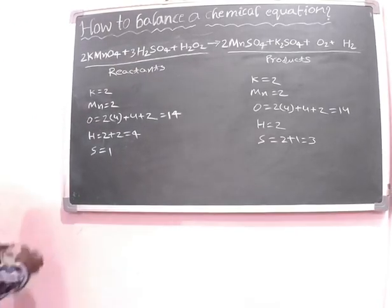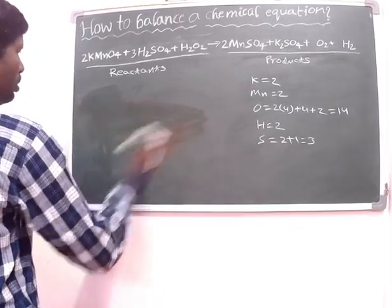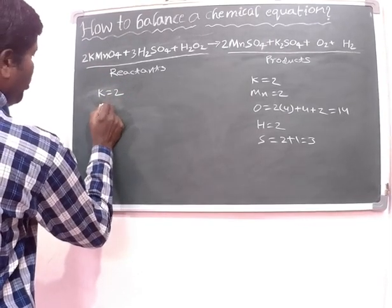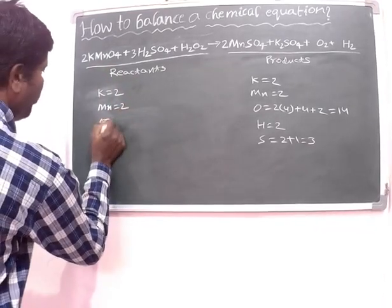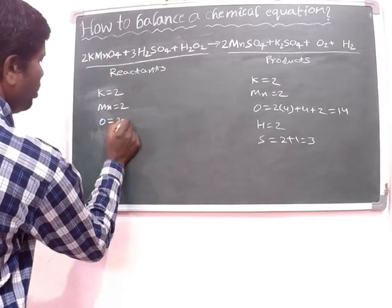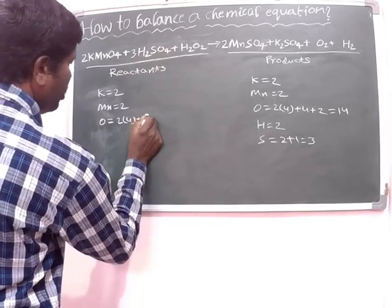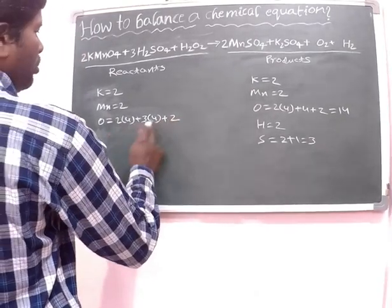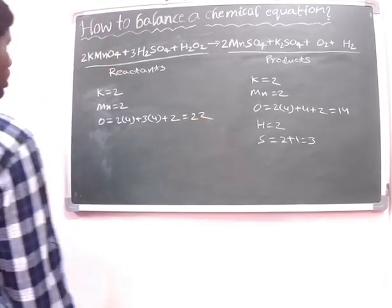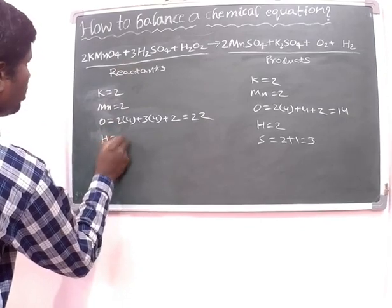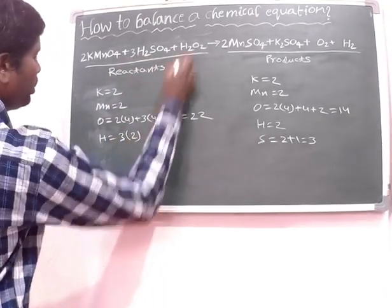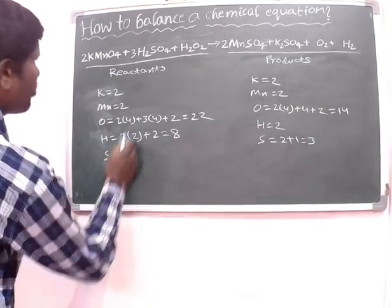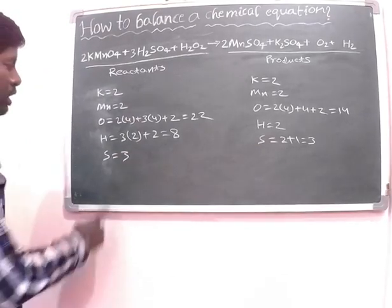Now we can write 3 here. Now the number of atoms are changed: the number of potassium atoms is 2, the number of manganese atoms is 2, the number of oxygen atoms is 2 into 4 plus 3 into 4 plus 2, that is equal to 22, the number of hydrogen atoms is 3 into 2 plus 2, that is equal to 8, and the number of sulfur atoms is 3. Now the sulfur atoms are balanced.